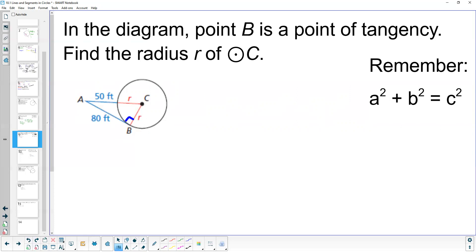Remember, the Pythagorean theorem is leg squared plus leg squared equals hypotenuse squared. Our hypotenuse is AC, which is 50 plus r. So (50 + r)² equals 80² plus r². We need to figure out what r is. 80² is 6,400, so 6,400 + r² equals...